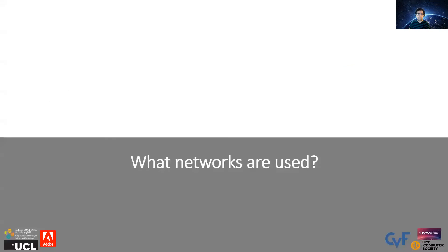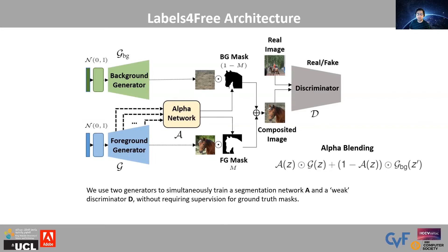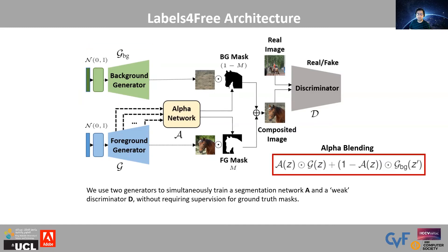What networks are used? We use a generator G, from which we derive the alpha network A, responsible for generating the masks. We also have a second generator GBG, responsible for generating background images. These images are then composited using the standard alpha blending operator.